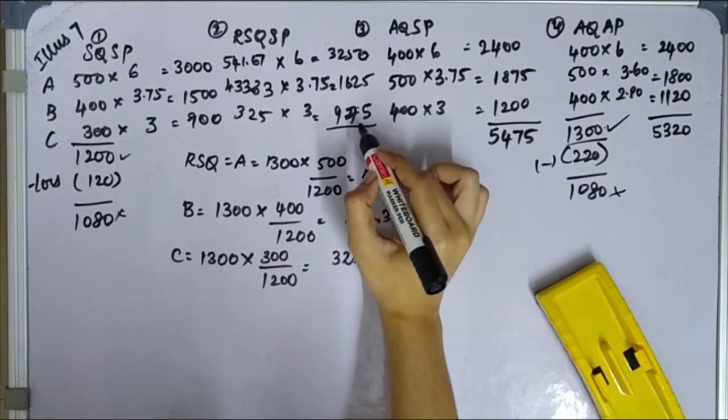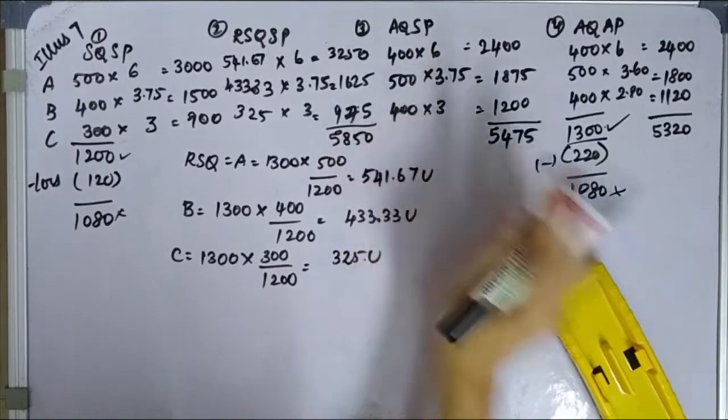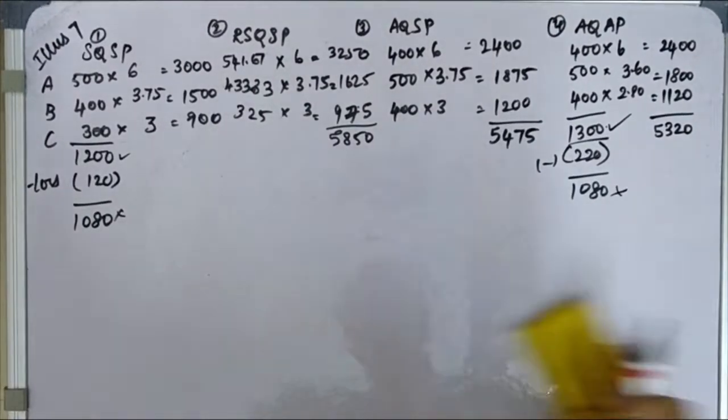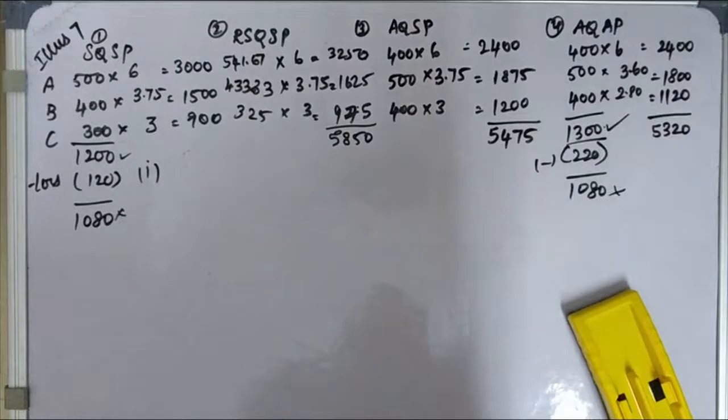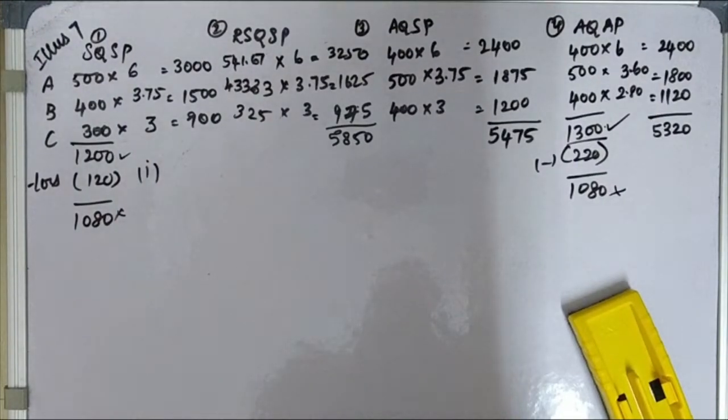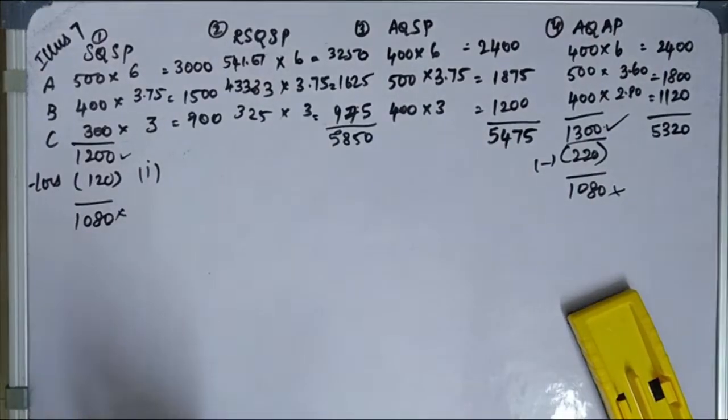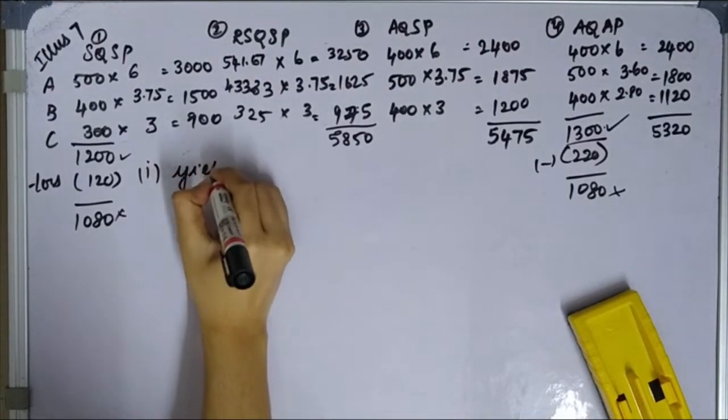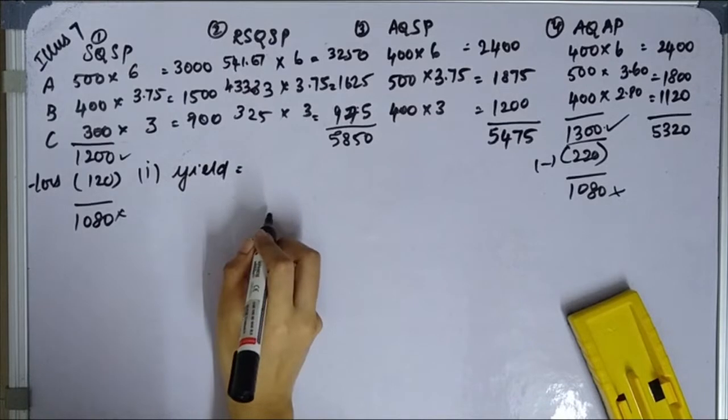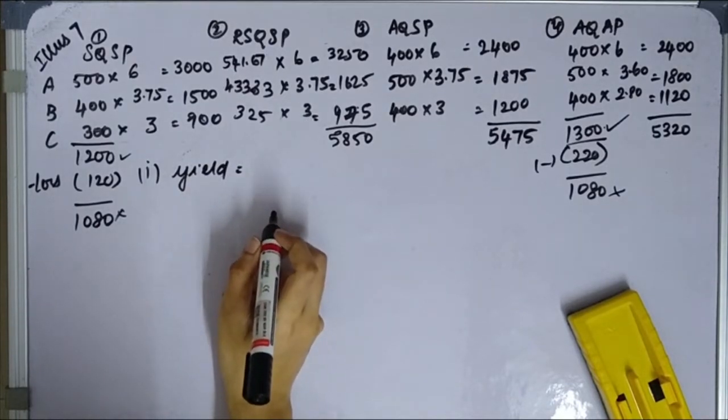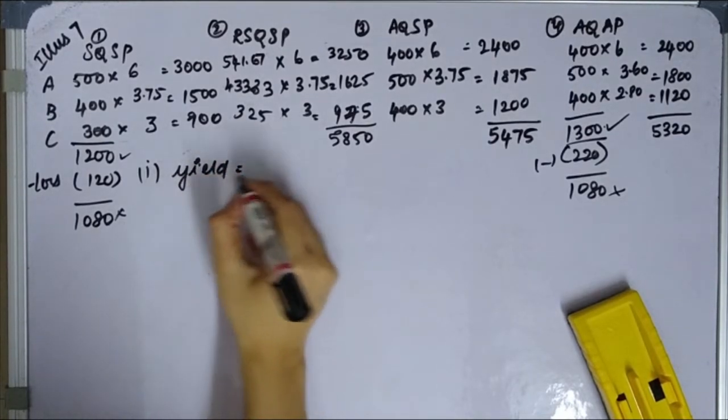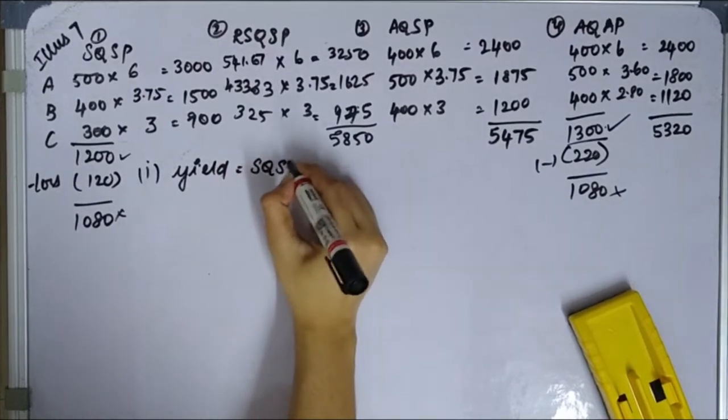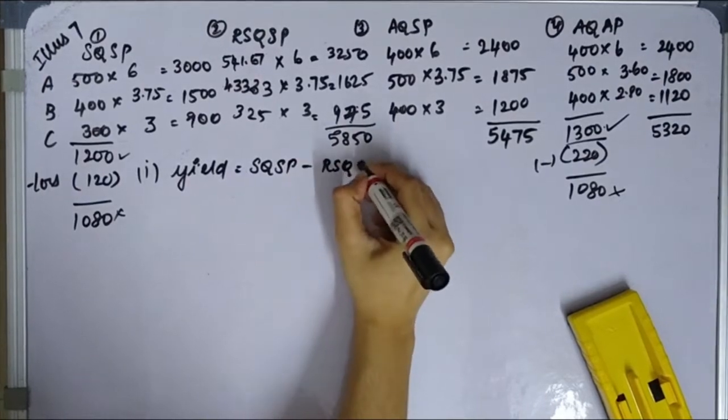Now variance calculation. All the variances are there. I'll start. First one is yield. In the format, there's an easy shortcut. I explained in the previous video. If you watch those videos, there's an easy complete shortcut method. So this one is SQ SP minus RSQ SP.